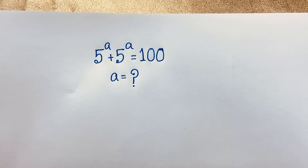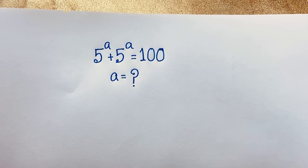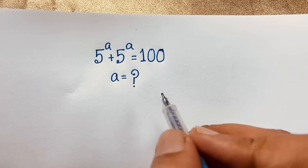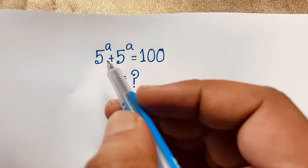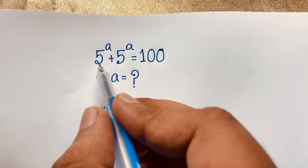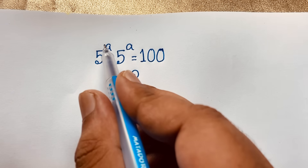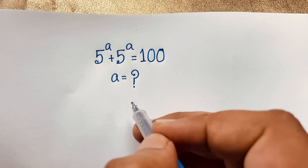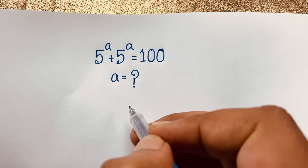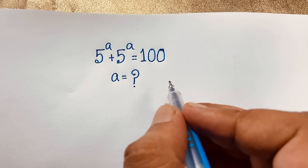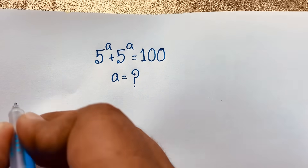Hello everyone, welcome to Rasha's classroom. Today we have solved a nice math Olympiad question — this exponential math problem. It will be 5 to the power A plus 5 to the power A is equal to 100. We will find out what is the value of A in this math problem.